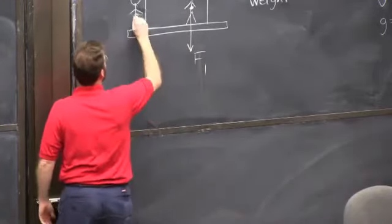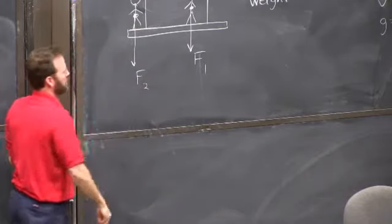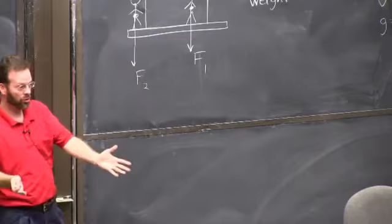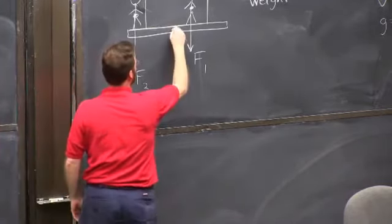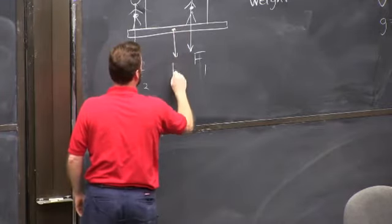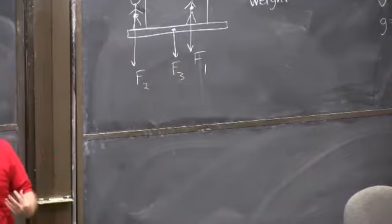So this guy has a weight. We'll call it force 1. This guy has a weight. Let's say he's bigger. Force 2. See the length of my arrows represent magnitude. So you can get an idea. But there's also the platform. It weighs something. It has mass. So there's three forces just due to gravity on these objects.